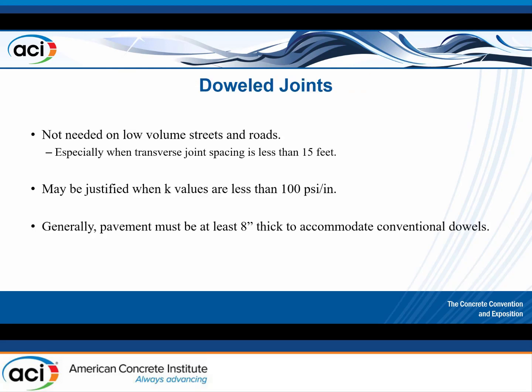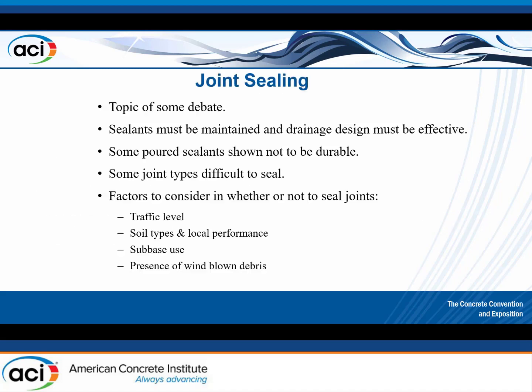Doweling is not typically used in lower-volume pavement designs. With ACI 325, it starts at eight-inch thick pavement. If you put round dowels in thinner pavements, you don't have sufficient concrete coverage over those dowels, which creates potential for cracking above them.